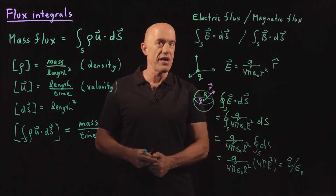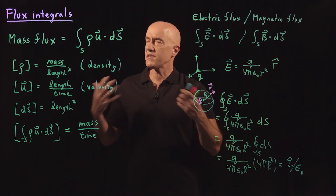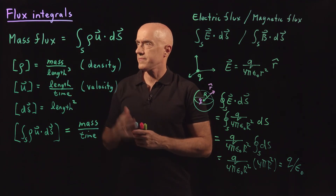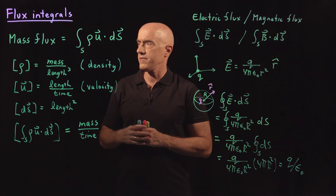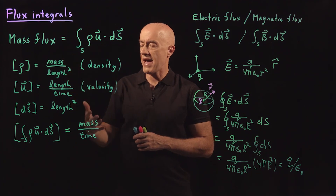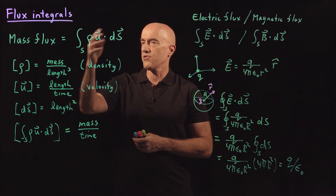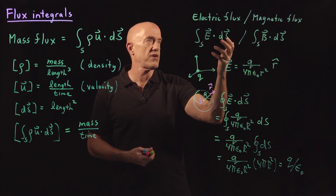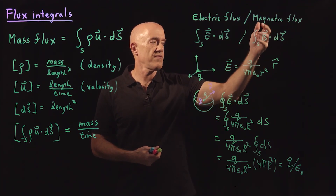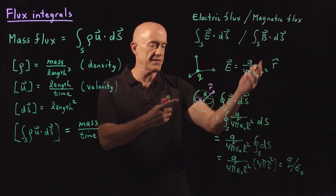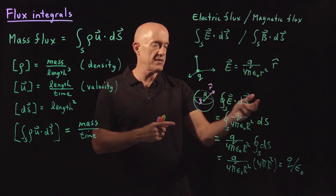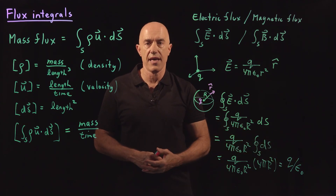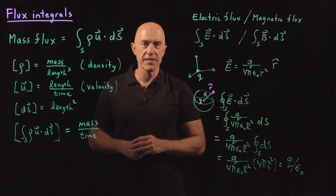That's actually one of Maxwell's equations. So let me summarize. In this video I wanted to introduce the physical meaning of a flux integral — the surface integral of a vector field. For mass flux, it's the mass per unit time that passes through the surface, given by the integral of rho u dot dS. For electric flux and magnetic flux, it's the integral of E dot dS and B dot dS respectively. The simple example of a charge q at the origin shows the electric flux through a sphere centered at the origin equals q divided by epsilon naught. I'm Jeff Chasnov — thanks for watching.